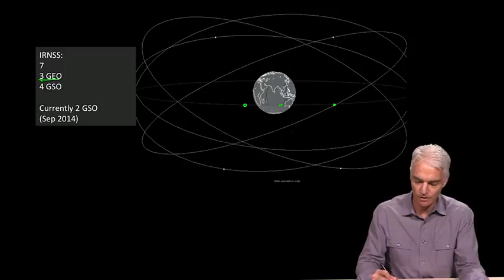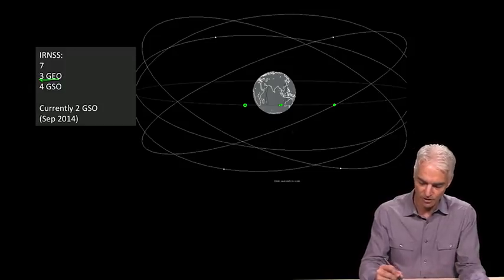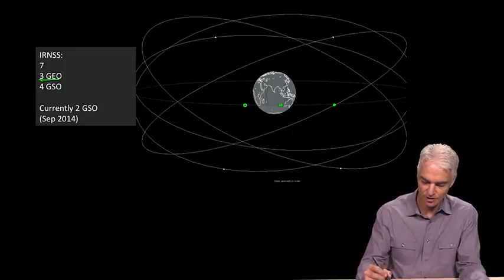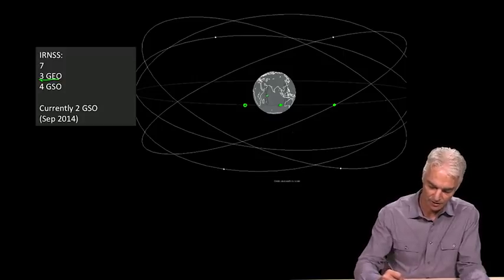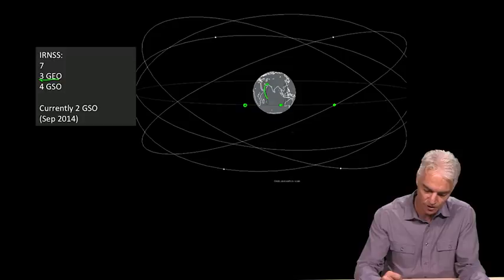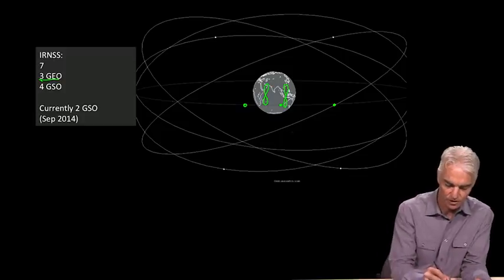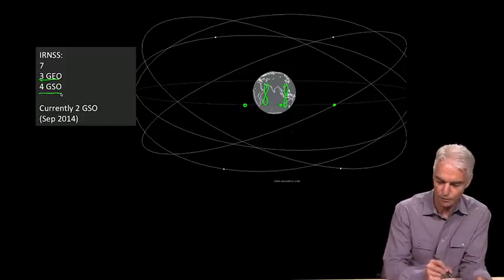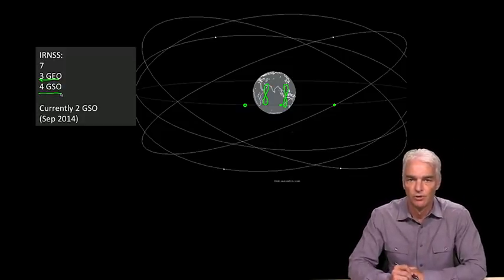And then four geosynchronous satellites in inclined geosynchronous orbits. And just like with QCSS and with Beidou, they produce these eights on the ground trackers, one at that longitude and one at that longitude. So those are the four geosynchronous orbits.